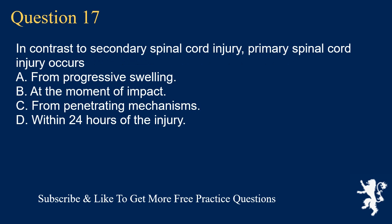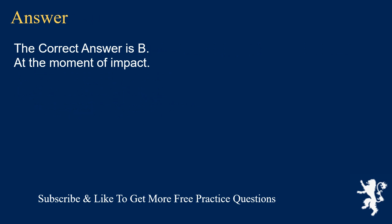Question 17. In contrast to secondary spinal cord injury, primary spinal cord injury occurs: A. From progressive swelling. B. At the moment of impact. C. From penetrating mechanisms. D. Within 24 hours of the injury. The correct answer is B. At the moment of impact.